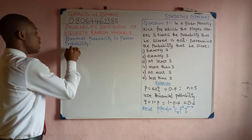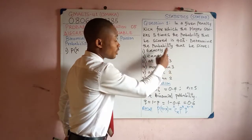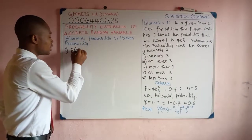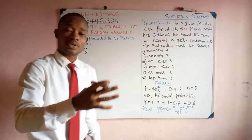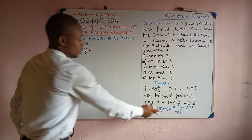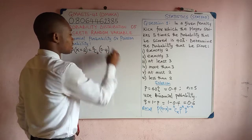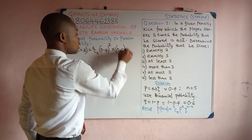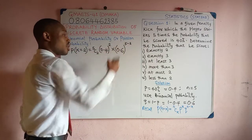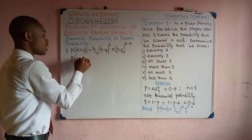The first part of the question asks us to find the probability that the player scored exactly 2. Exactly means X is equal to 2. So we fix that into the formula. N is 5, so it's going to be 5 combination 2, then times probability of success 0.4 raised to power 2, times probability of failure 0.6 raised to power N minus X. N is 5 and X is 2, so 5 minus 2 is 3, giving us 0.6 raised to power 3.